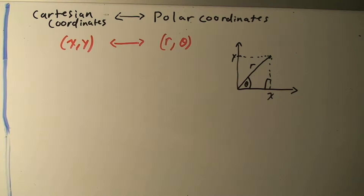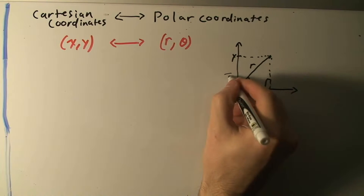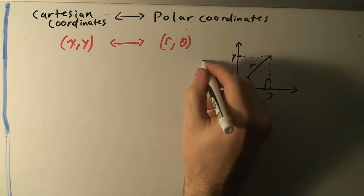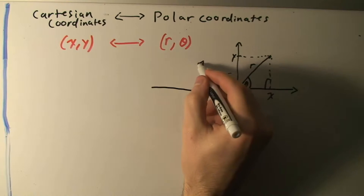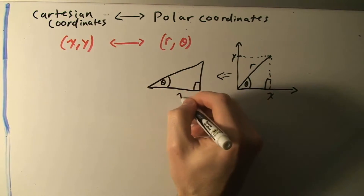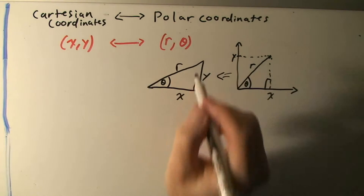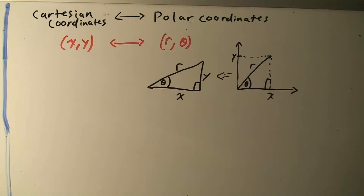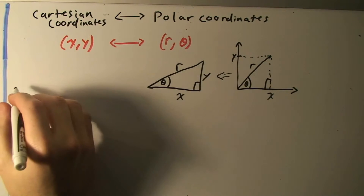In order to convert from x and y to r and theta, we can use trigonometry to derive some formulas. If we think about this right triangle — with sides x, y, and hypotenuse r, and angle theta — we can use SOH CAH TOA.